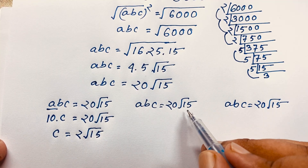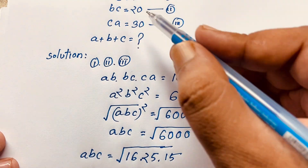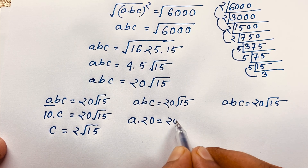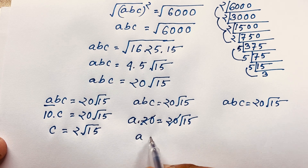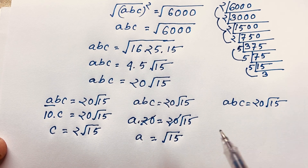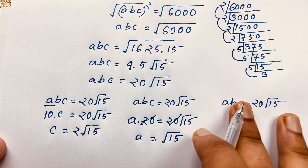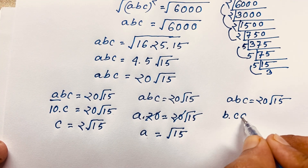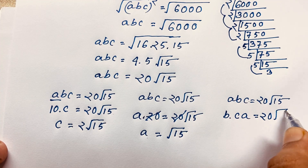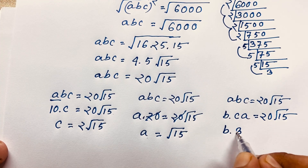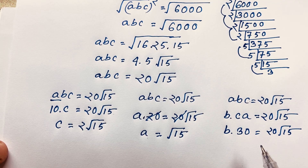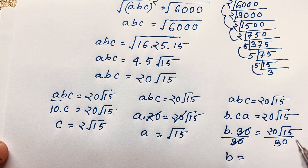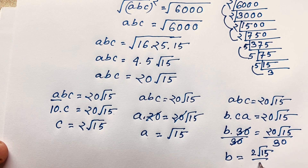Then ABC equals 20√15. Recalling that BC is equal to 20, I write A times BC equals 20√15, so A times 20 equals 20√15. These cancel out and we find A is equal to √15. Now, ABC equals 20√15 and CA equals 30, so B times CA equals 20√15, meaning B times 30 equals 20√15. Dividing both sides by 30, B equals 2√15 over 3.